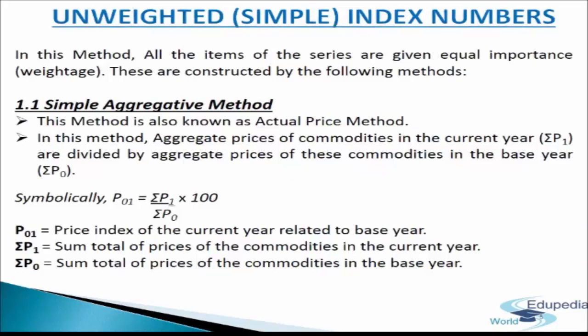In the construction of unweighted or simple index numbers, all the items of the series are given equal importance or weightage. No specific weightage is given to any item, because all items are assumed to be equally important. These are constructed by the simple aggregative method and the simple average of price related method, which will be discussed in detail in the coming slides.